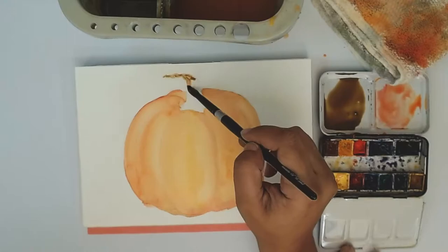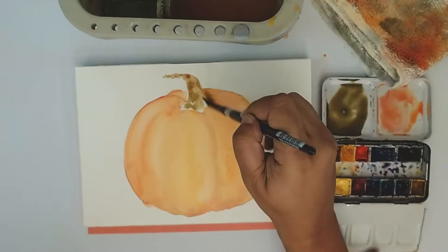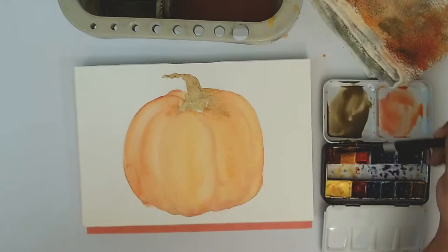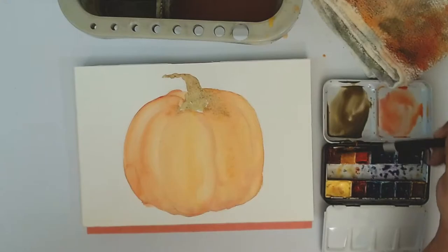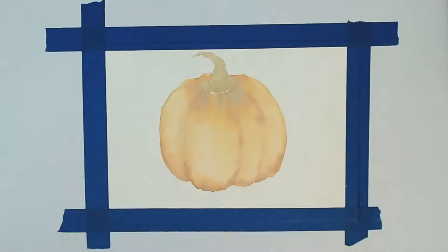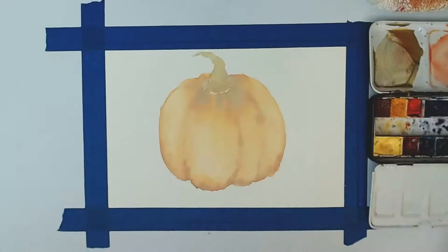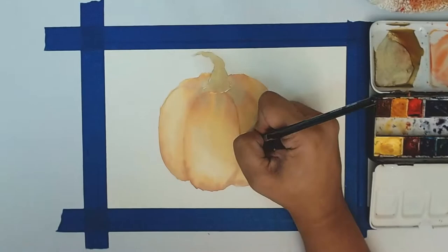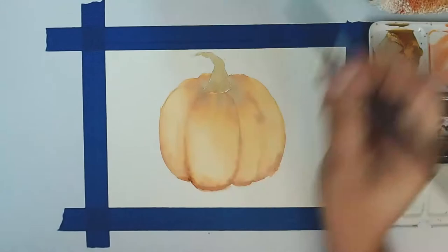When you're doing wet on wet you kind of expect the paint to feather out and spread out a little bit, which it does on cold pressed paper, and it did not do that on the hot press paper. But as it dried, I noticed it would slowly start to creep into the other areas. So for me that was really unexpected and something that I would definitely have to get used to if I were to continue working with the hot press paper.